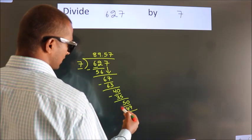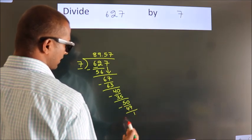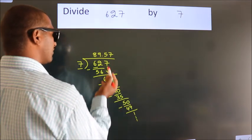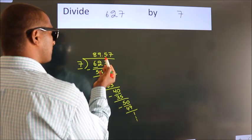Now we subtract and get 1. The division continues, but it is enough if we go up to 2 decimal places.